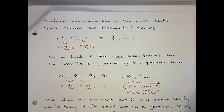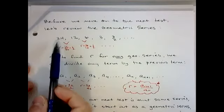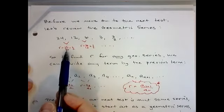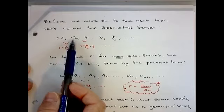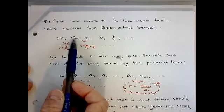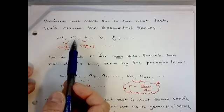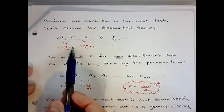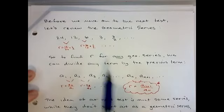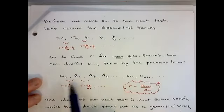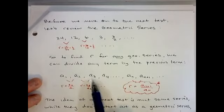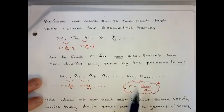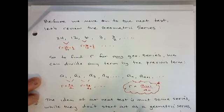Before we move on to our next test for series, let's review the geometric series because the next couple of tests are based off the geometric series idea. To get from one term to the next in a geometric series, you're multiplying by the same number — for example, 24, 12, 6, 3, 3/2 — each time times one half. Another way to find your R value is to take a term and divide it by the previous term: 12 over 24 is 1/2, 6 over 12 is 1/2. So for any geometric series, a_(n+1) divided by a_n gives you R.